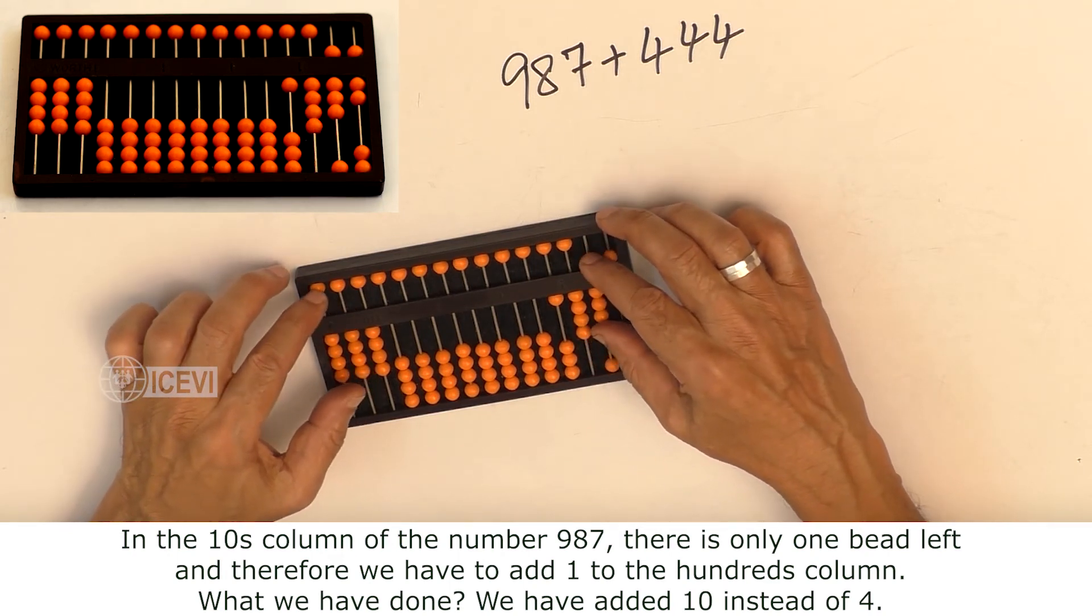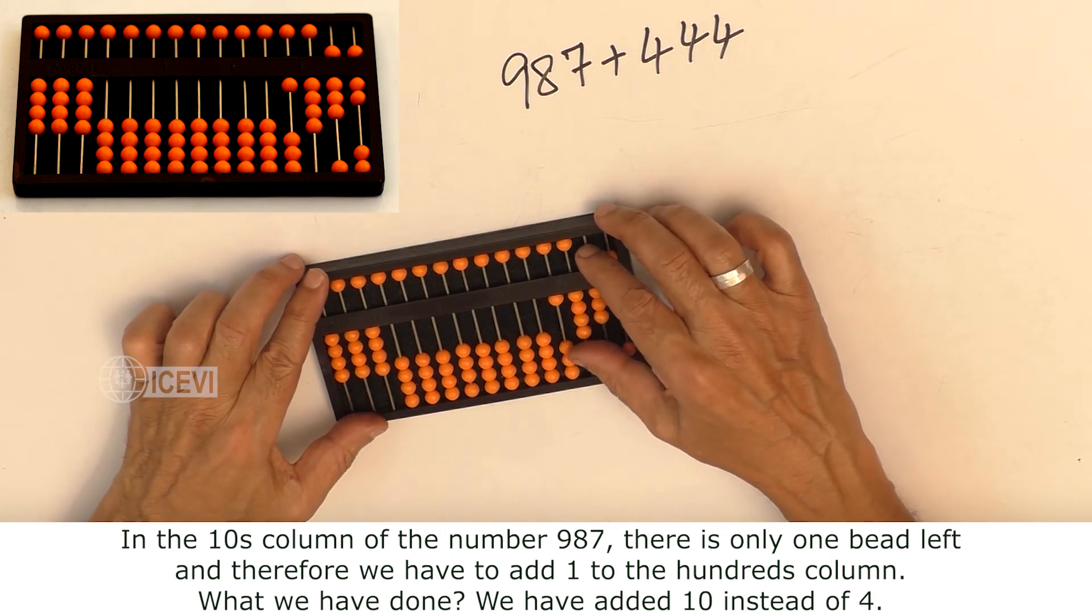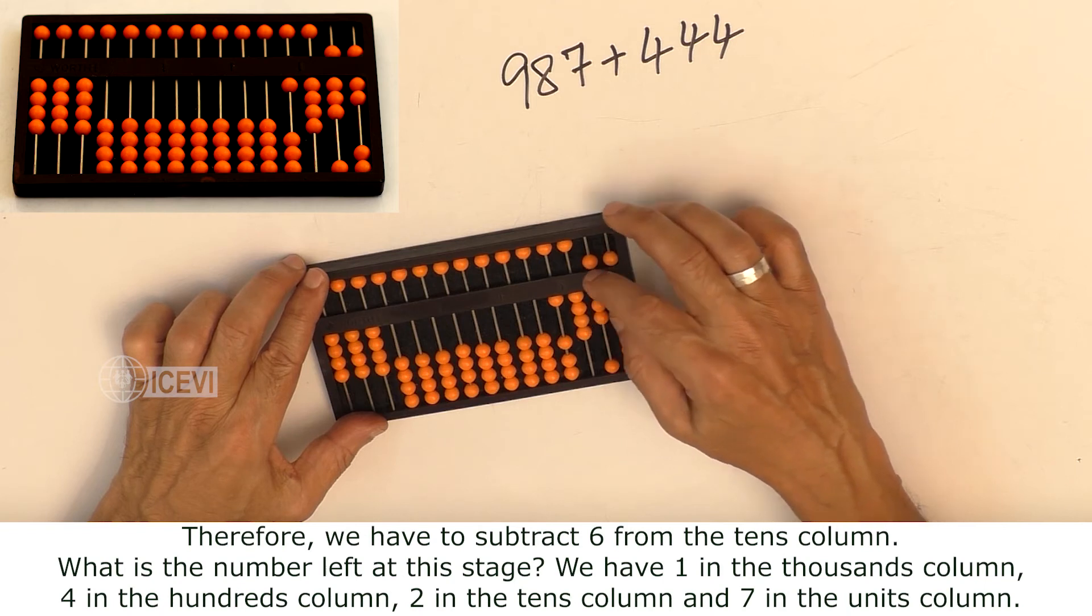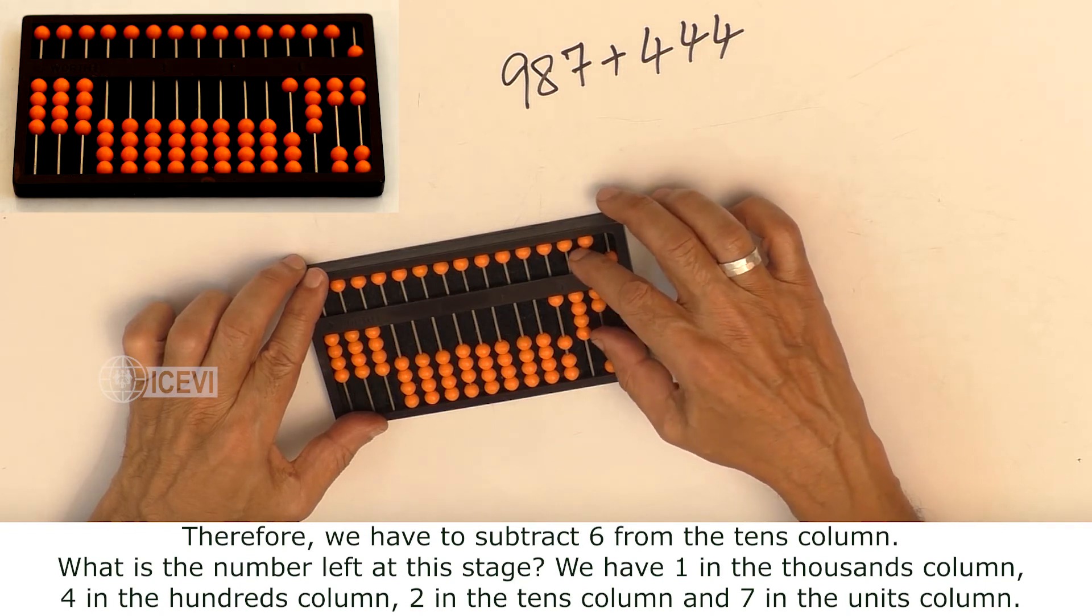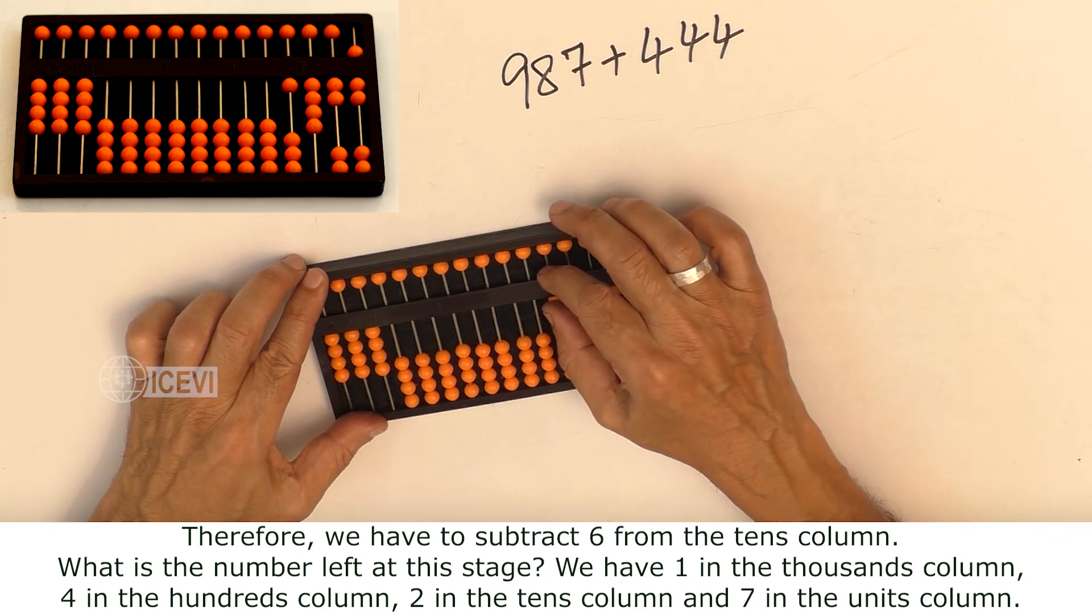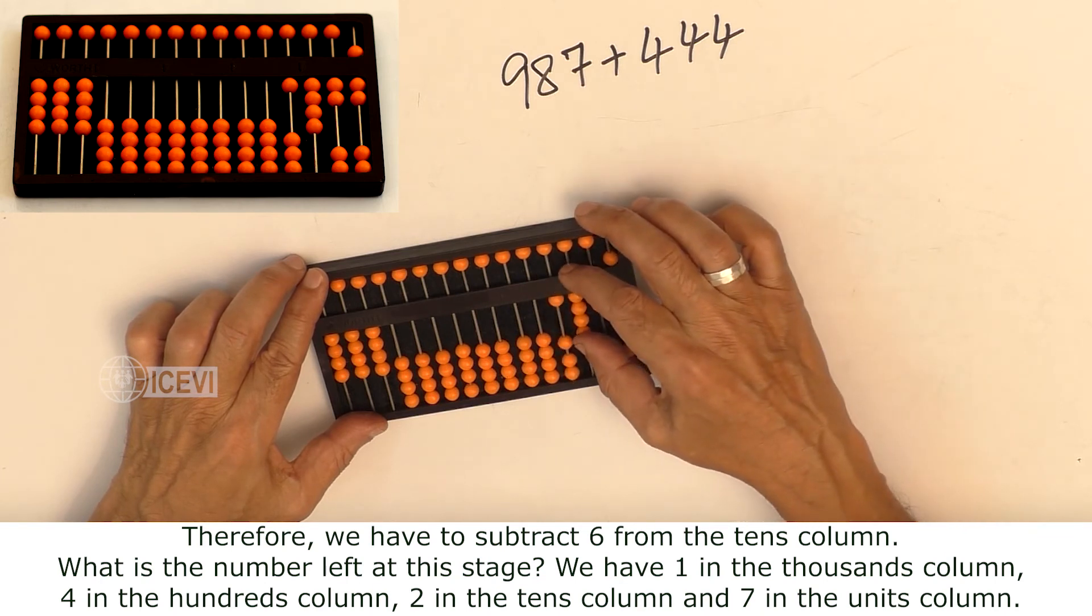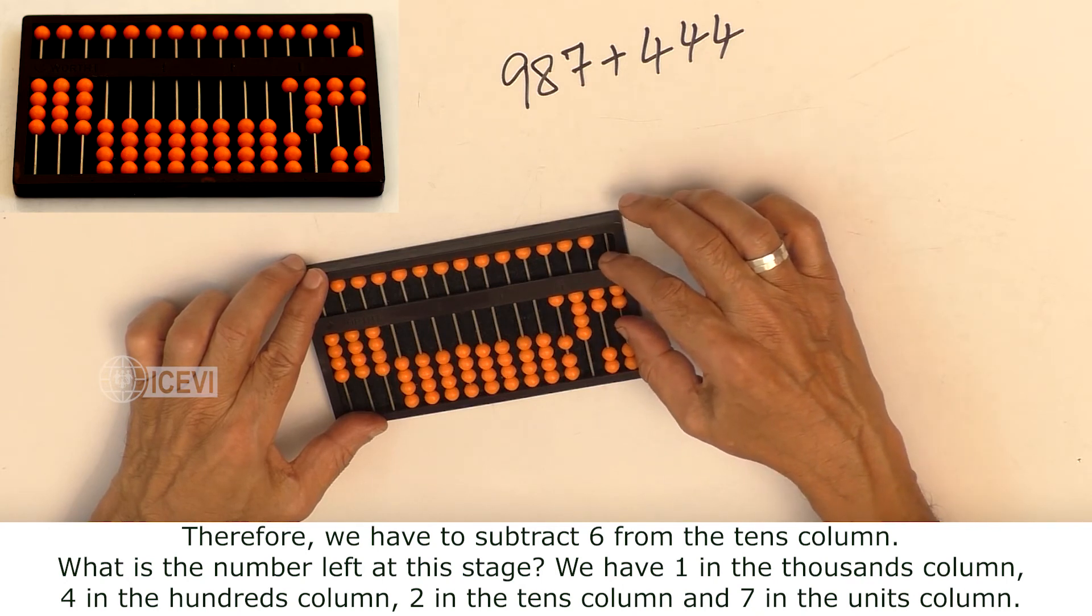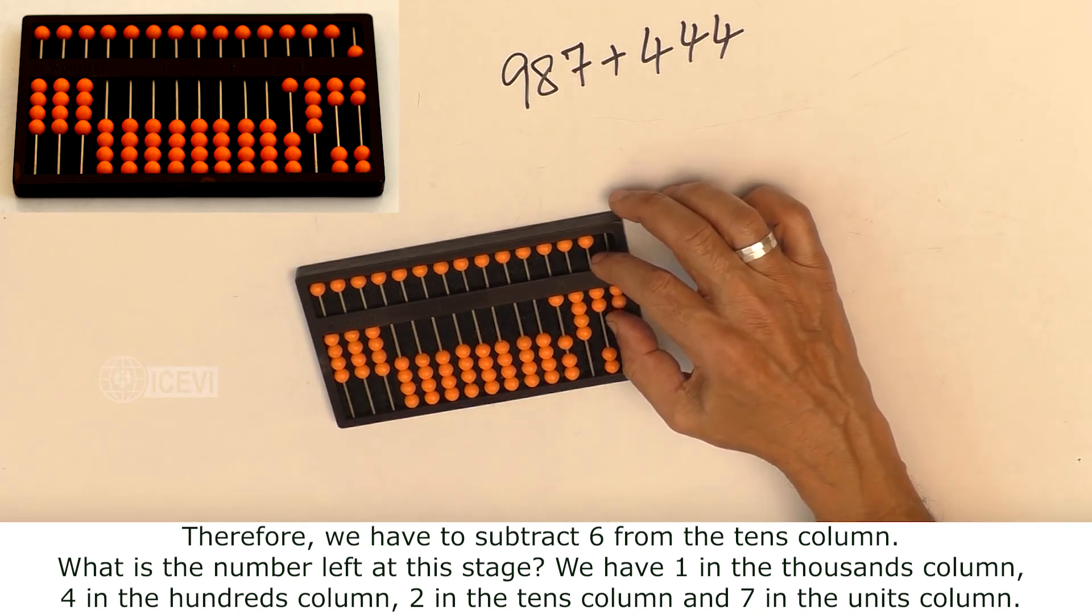What have we done? We have added 10 instead of 4. Therefore, we have to subtract 6 from the tens column. What is the number left at this stage? We have 1 in the thousands column, 4 in the hundreds column, 2 in the tens column, and 7 in the units column.